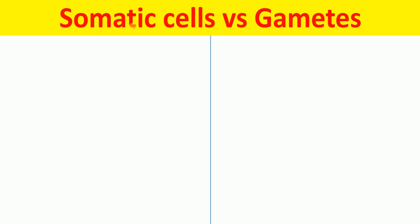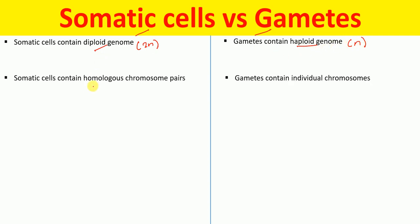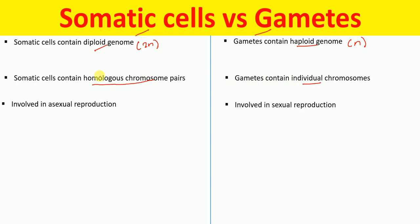Differences between somatic cells versus gametes: somatic cells contain a diploid genome, meaning 2n number of chromosomes, whereas gametes contain a haploid genome, meaning n number of chromosomes. Somatic cells contain homologous chromosome pairs, whereas gametes contain individual chromosomes.